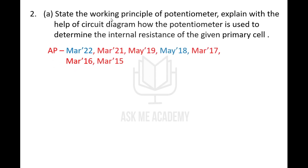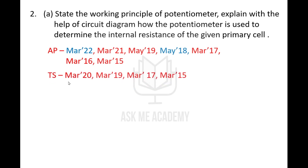The second question is: state the working principle of a potentiometer, and explain with the help of a circuit diagram how the potentiometer is used to determine the internal resistance of the given primary cell. This question was asked in 7 out of 10 AP papers, and in Telangana it was asked 4 times out of 7 papers. In March 2022 of AP and May 2018 of AP, only this question was given for complete 8 marks. In the other years and in Telangana, an additional question was also given.